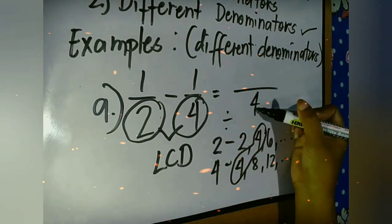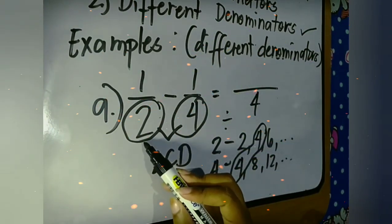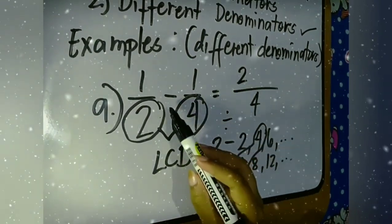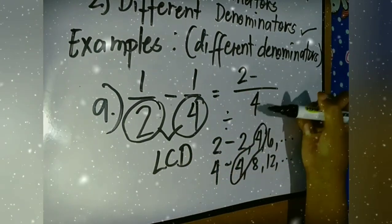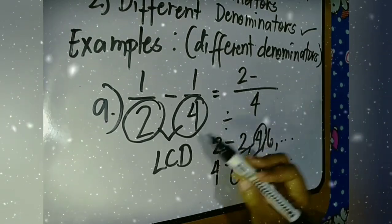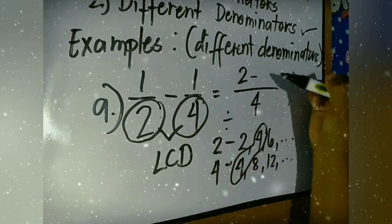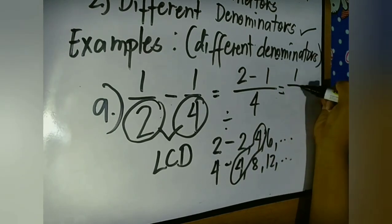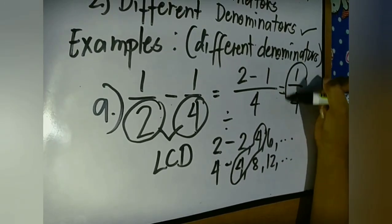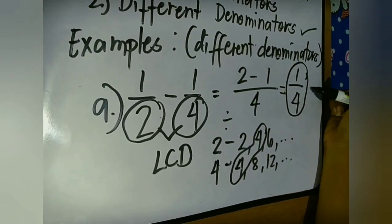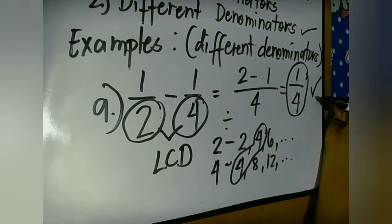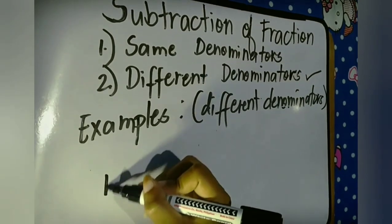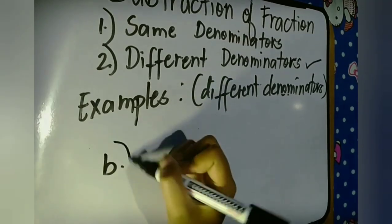Next step: four divided by two equals two, times one equals two. Then minus: four divided by four equals one, times one equals one. Two minus one equals one, and the denominator is four. So the answer is one fourth.